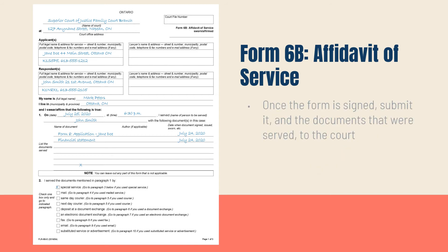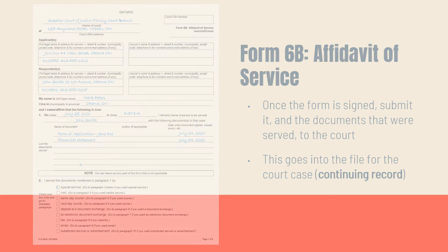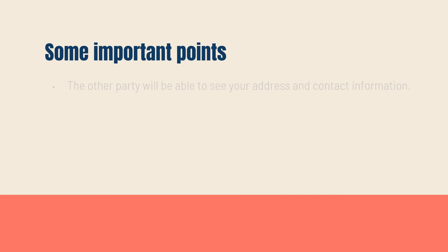Once the Affidavit of Service is signed, it goes into the file for your court case, which is called a continuing record, along with the originals of the documents that were served. When you serve documents, the other party has access to all the information you will be providing to the court.